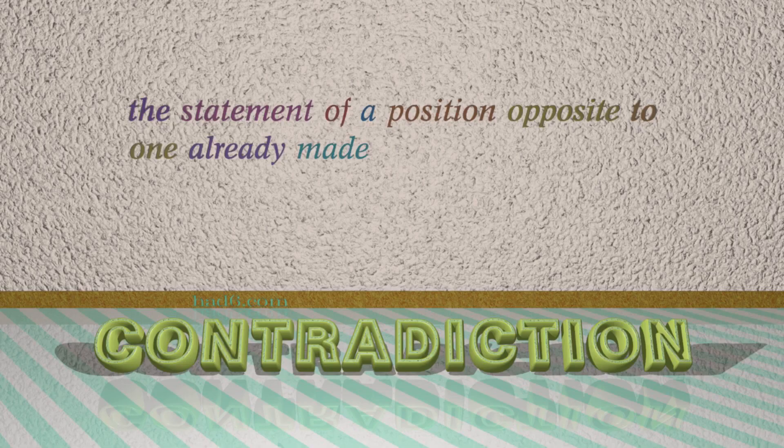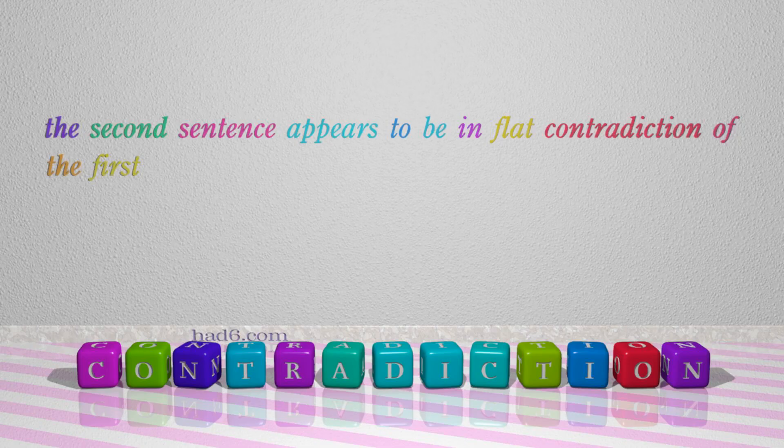Number 5: Contradiction — which means the statement of a position opposite to one already made. For example: The second sentence appears to be in flat contradiction of the first.